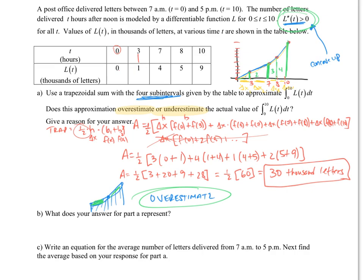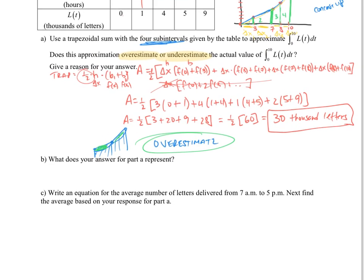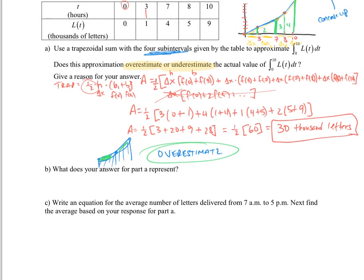The next part says, what does your answer for part A represent? Well, what did we just do? We found an answer of 30,000 letters. This means that this is the approximate number of letters delivered from that 7 a.m. mark to the 5 p.m. mark. So that's the approximate total number of letters that we delivered from that time period.